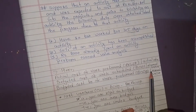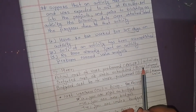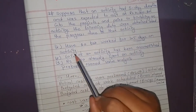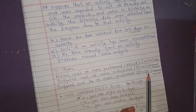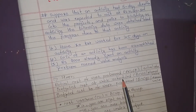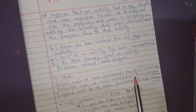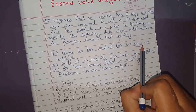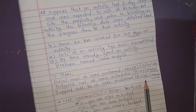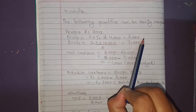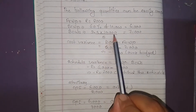BCWP is the budgeted cost of work performed. Since 60% of work is complete and the total budget is RS 10,000, BCWP equals 60% of 10,000, which is RS 6,000. BCWS is the budgeted cost of work scheduled. Since 3.5 days have elapsed out of 5 days total, BCWS equals 3.5 divided by 5, multiplied by 10,000. So ACWP is 8,000, BCWP is 6,000, and BCWS is 7,000.